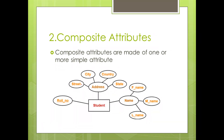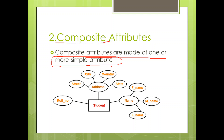Next is composite attribute. Composite attributes are made up of one or more simple attributes. For example, consider student attributes: roll number, address, and name. Roll number is a simple attribute. Address is not a simple attribute because we can subdivide it — into street name, city name, country, and state. So address is a composite attribute.